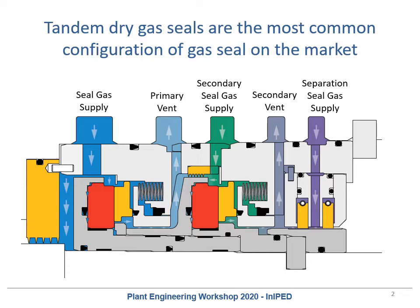Moving over next is the secondary vent. The secondary vent takes the leakage from the secondary seal and is generally left as unrestricted as possible. This is a vent that usually goes directly to atmosphere and should be routed to a safe location. Depending on the process and conditions, that might just mean a hole in the compressor or it might mean routing it 10 feet in the air away from any personnel at site.